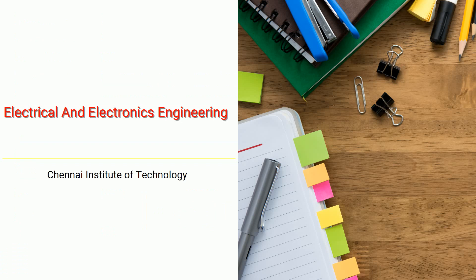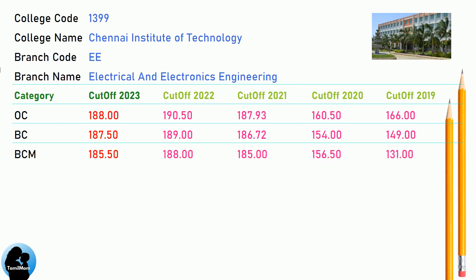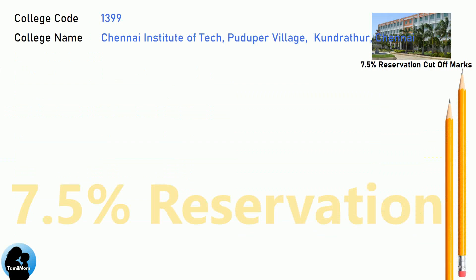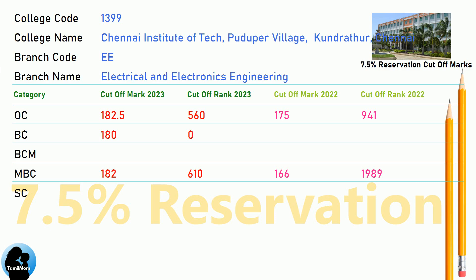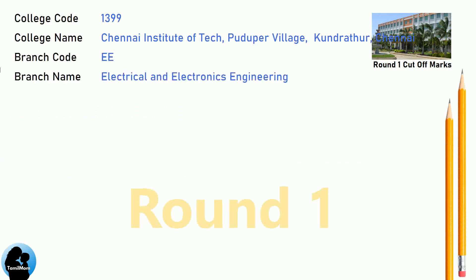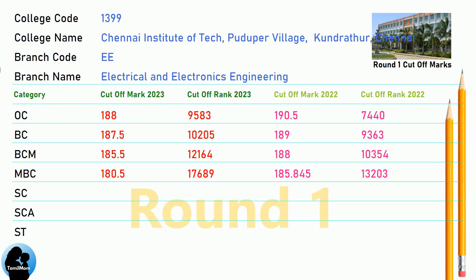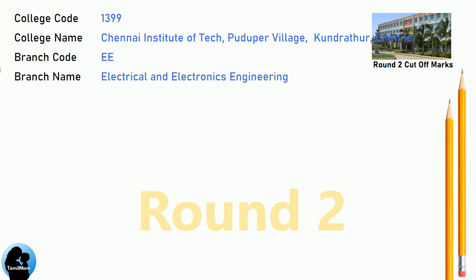DNA Cut-off for Chennai Institute of Technology in Electrical and Electronics Engineering. DNA 7.5 Reservation Cut-off for Chennai Institute of Technology in Electrical and Electronics Engineering. DNA Round 1 Cut-off for Chennai Institute of Technology in Electrical and Electronics Engineering. DNA Round 2 Cut-off for Chennai Institute of Technology in Electrical and Electronics Engineering.